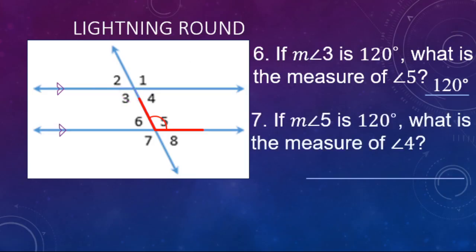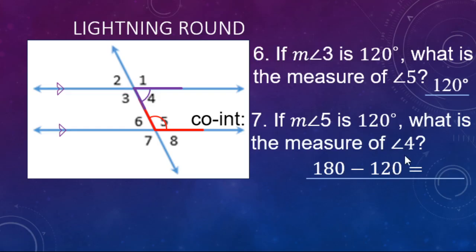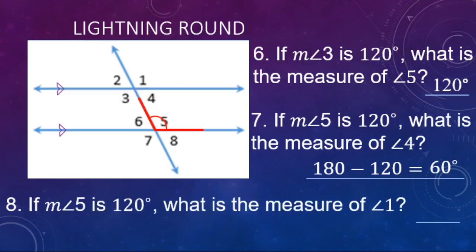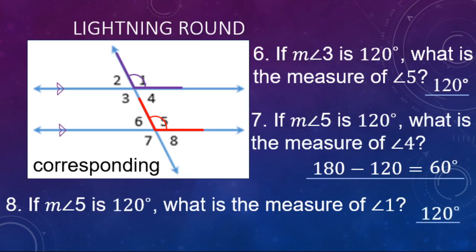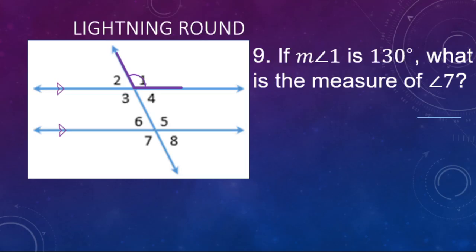Number seven: if angle five is 120 degrees, what is angle four? These are consecutive interior angles — supplementary, adding to 180. So 180 minus 120 gives angle four as 60 degrees. Number eight: if angle five is 120 degrees, what is angle one? These are corresponding angles, equal in measure — angle one is 120 degrees. Number nine: if angle one is 130 degrees, what is angle seven? They are alternate exterior angles, congruent — so angle seven is also 130 degrees.